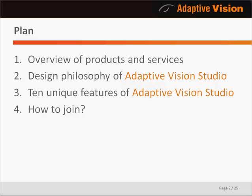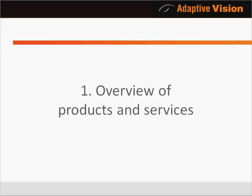The presentation is divided into four parts. First I will make an overview of our entire offer, then in the second and third part I will proceed with a demonstration of our flagship product, Adaptive Vision Studio. In the last part I will give you the links and direct contacts for getting the software onto your computer.